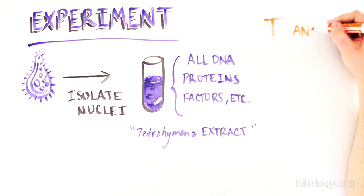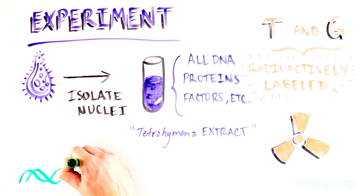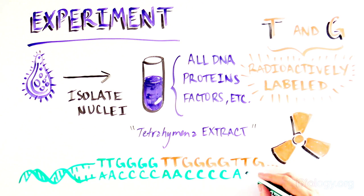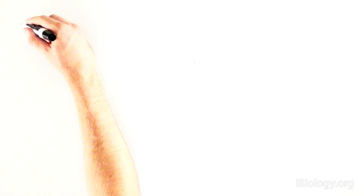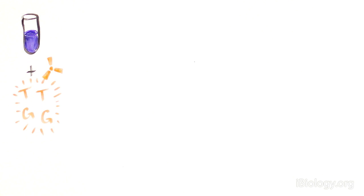They labeled T or G nucleotides with radioactivity. These nucleotides would be incorporated into the newly formed telomeres and radioactively label this new sequence. The scientists mixed the extract, radioactively labeled T and G nucleotides, and a single-stranded DNA template that mimics an already existing telomere in a test tube.